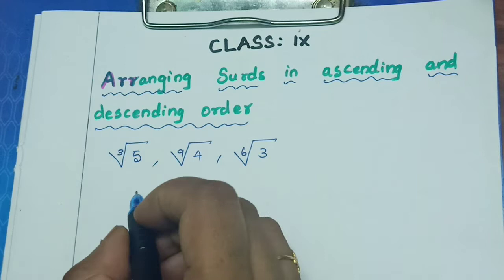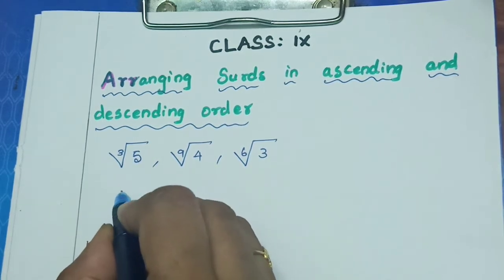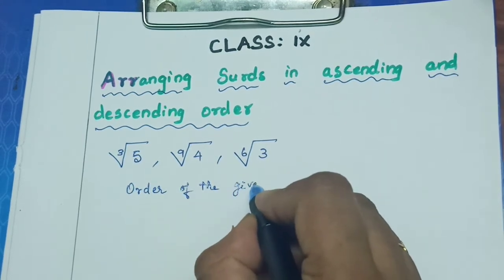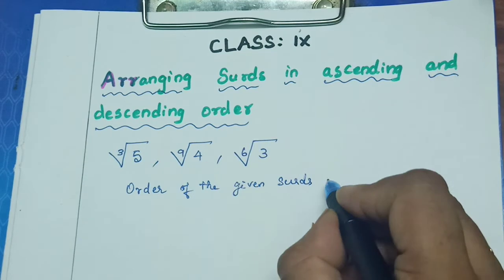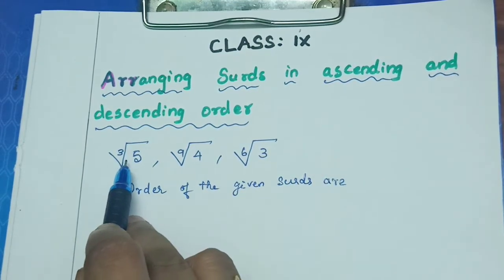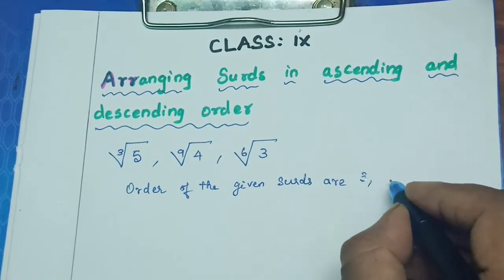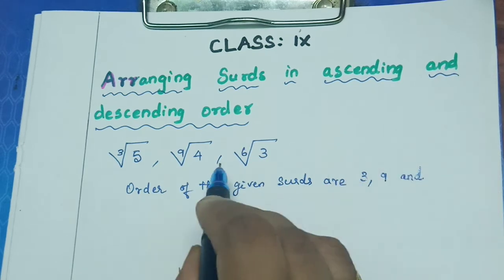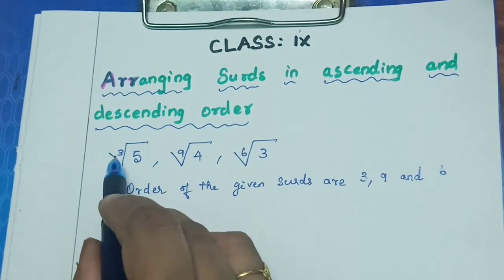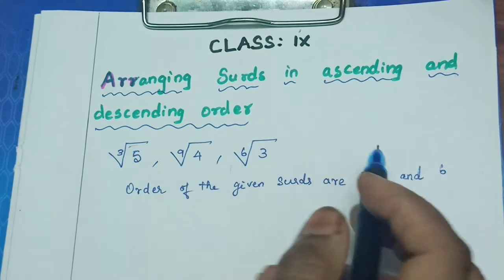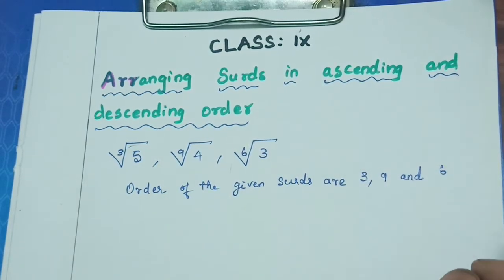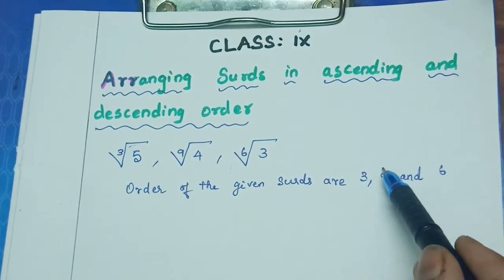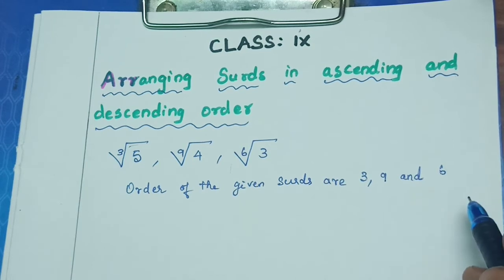First, write down the orders of the given surds. The order of cube root of 5 is 3, the order of 9th root of 4 is 9, and the order of 6th root of 3 is 6. The order is the number inside the V part of the radical symbol. The orders are all different, so we want to represent a single common number for these three — the basic concept is LCM.